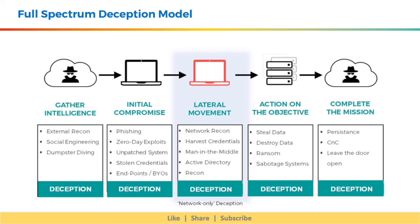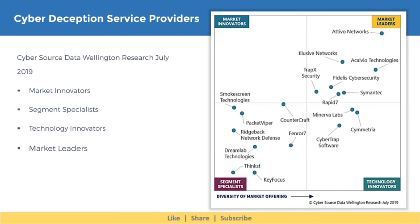Let's discuss top cyber deception service providers available in the market. Using the Cyber Source Data Wellington Research Report published in July 2019, players are categorized in four buckets: market innovators, segment specialists, technology innovators, and market leaders. Some notable players include Adivo Networks, Elusive Networks, Acalvio Technologies, Smokescreen, and CounterCraft, among others.